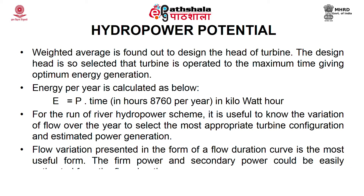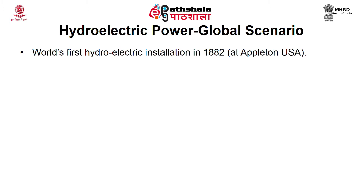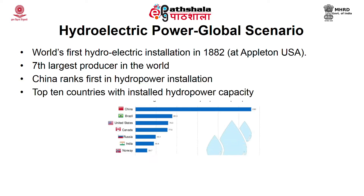For run-of-river hydropower schemes, flow variation is presented as a flow duration curve, which is the most useful form for estimating firm and secondary power. The world's first hydroelectric power plant was installed in 1882 at Appleton, USA. India ranks 7th among the top ten countries in hydroelectric power generation.